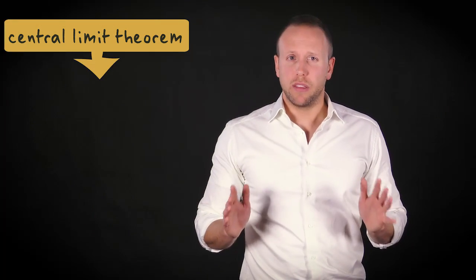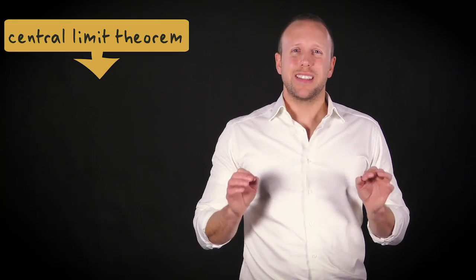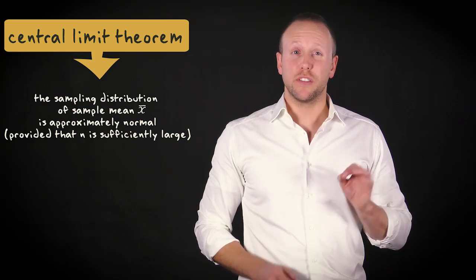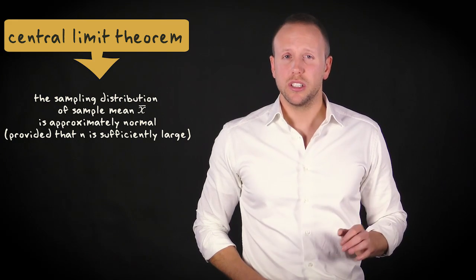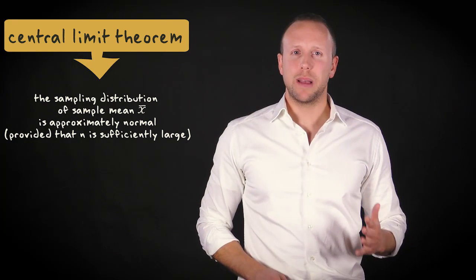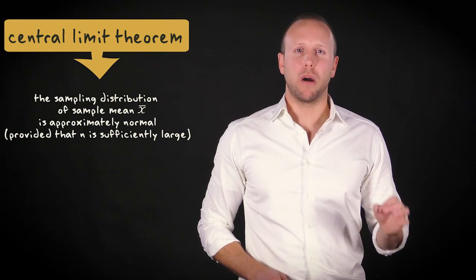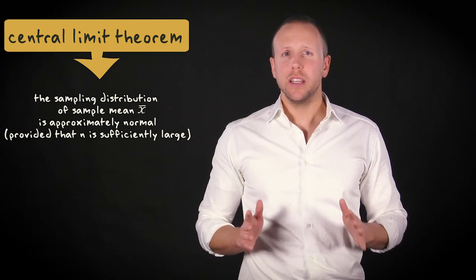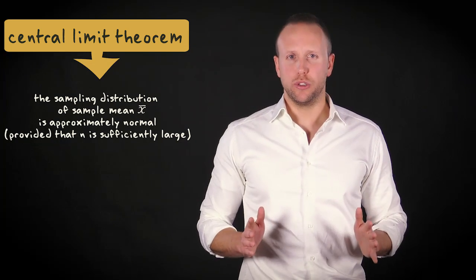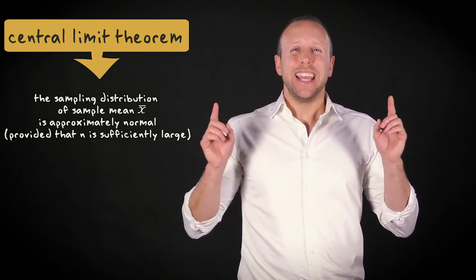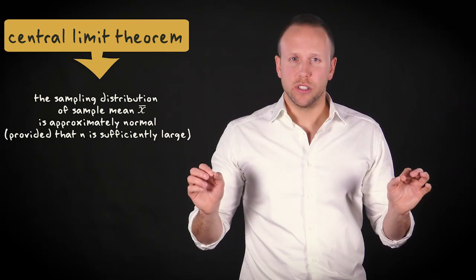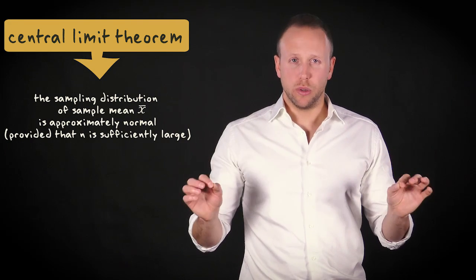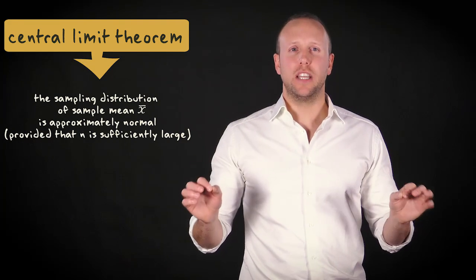The central limit theorem says that, provided that the sample size is sufficiently large, the sampling distribution of sample mean x-bar has an approximately normal distribution, even if the variable of interest is not normally distributed in the population.